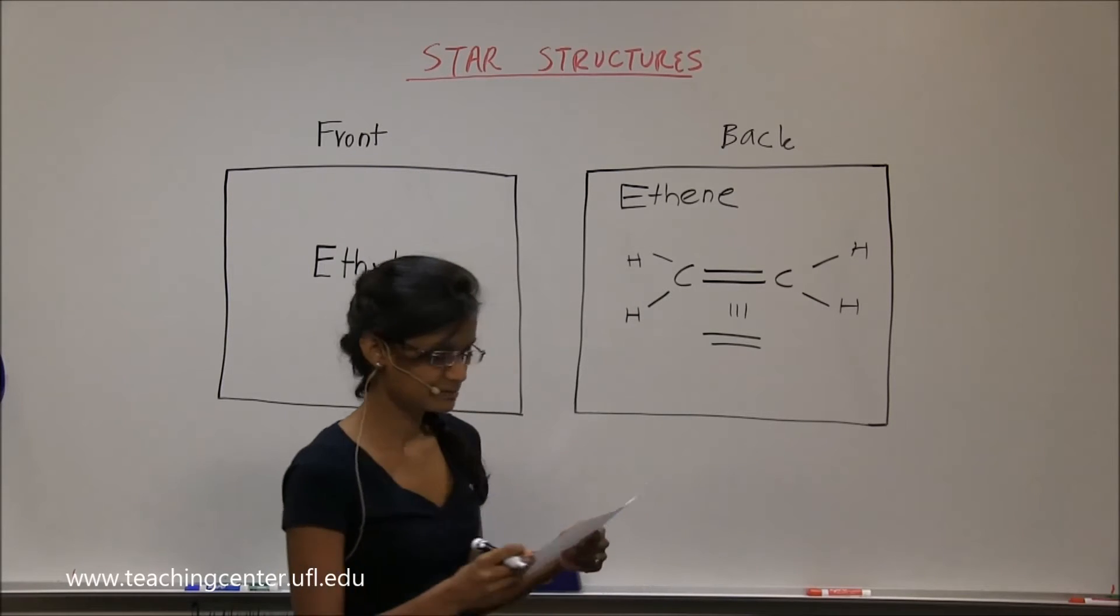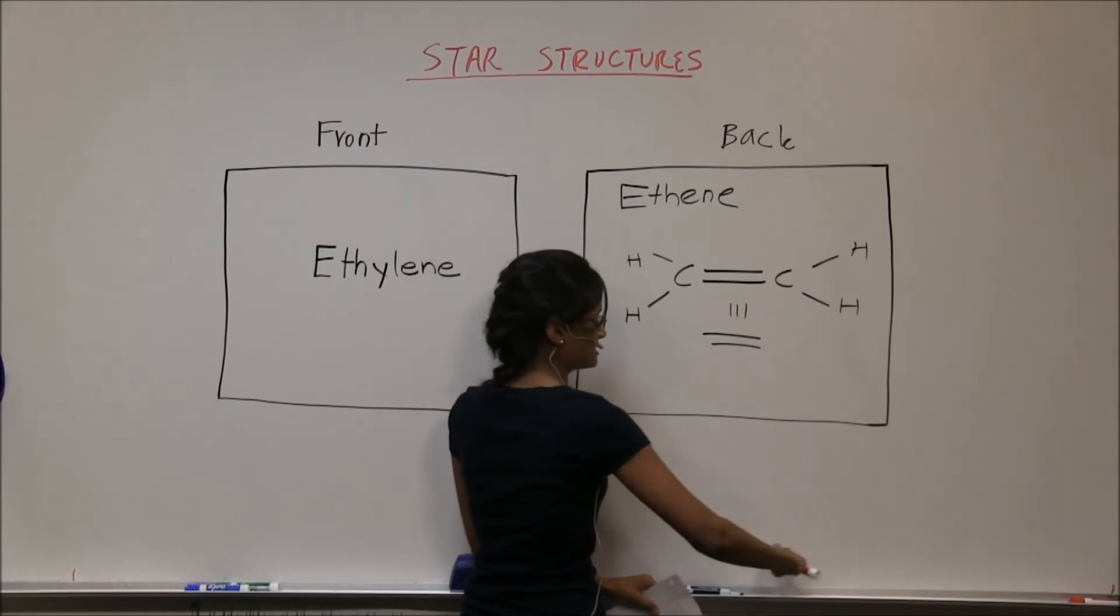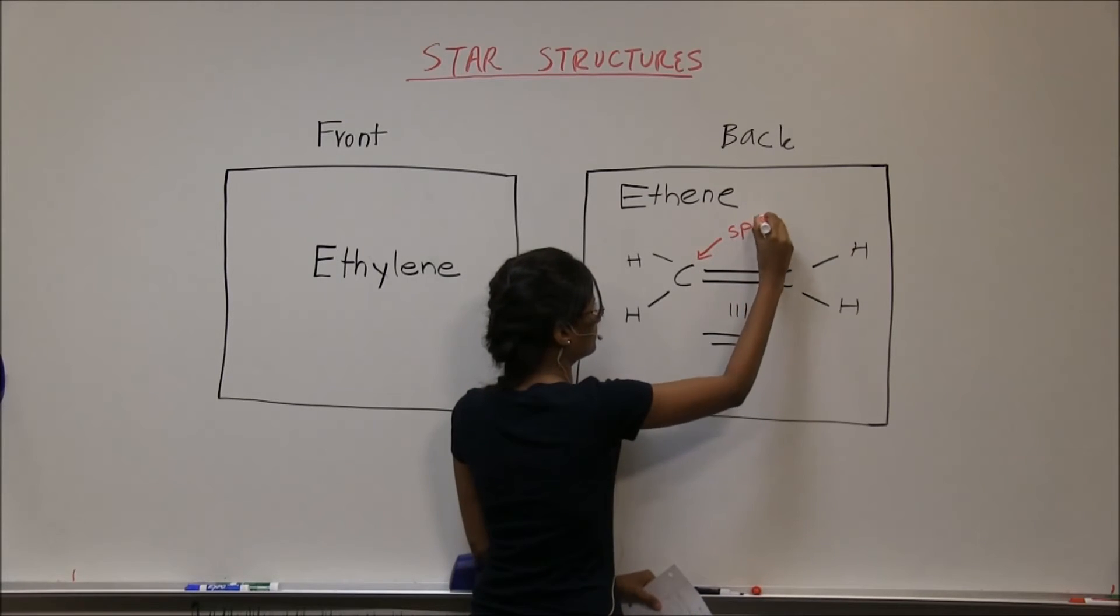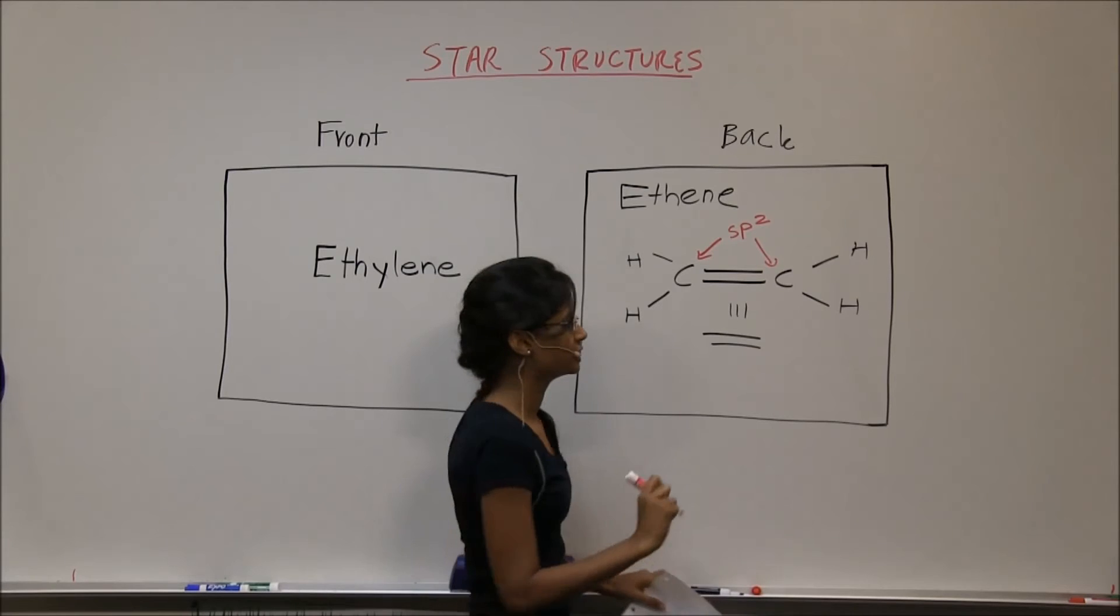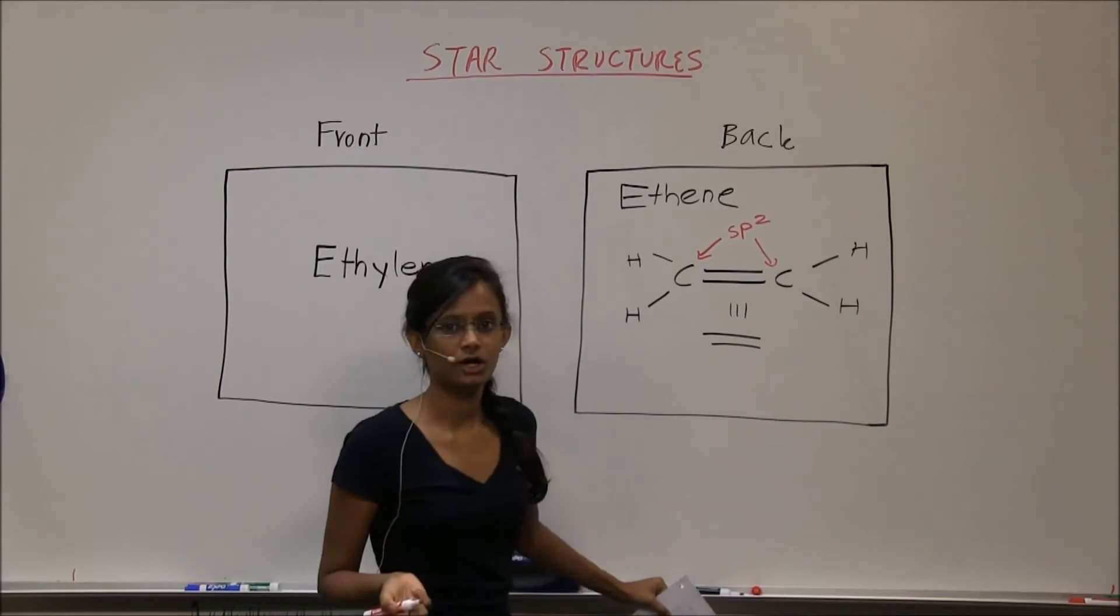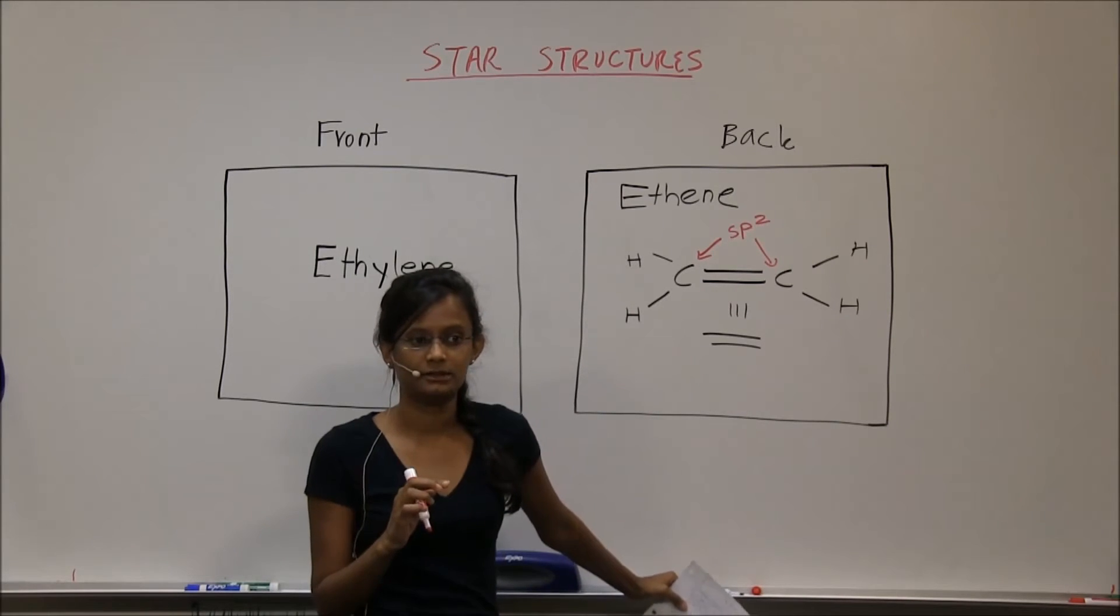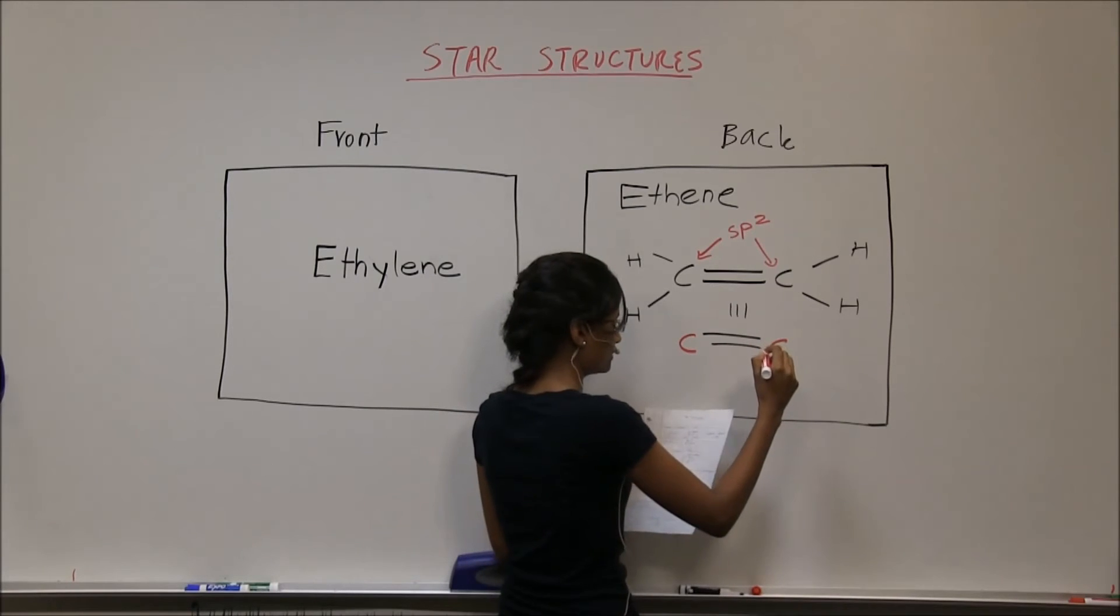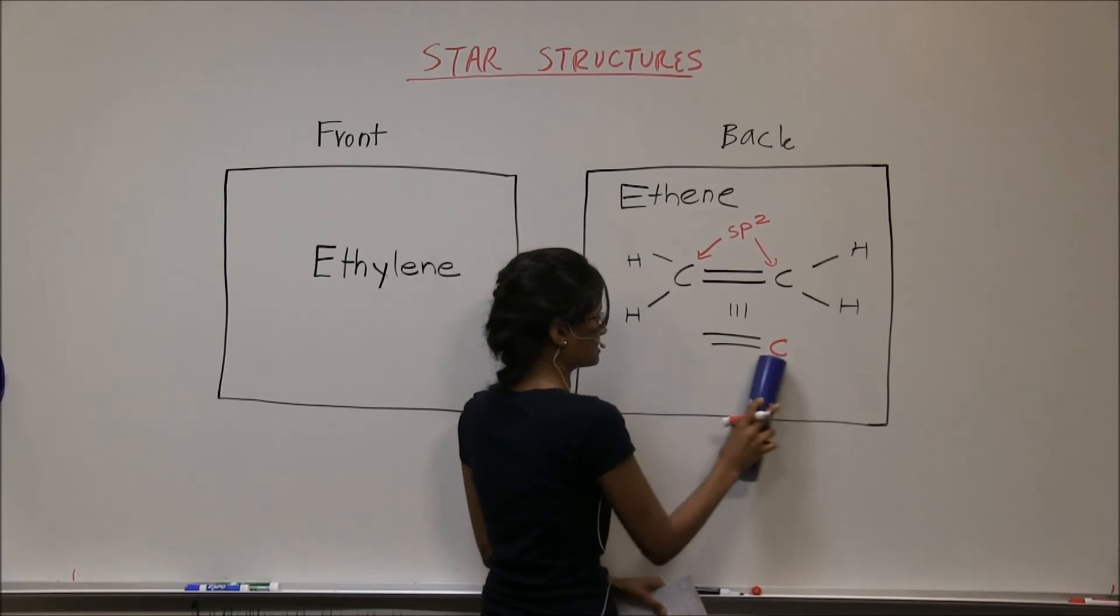Okay, anything else about ethene? Yes, so the hybridization of both of these carbons is sp2. So the shape is going to be trigonal planar. Always try to draw a double-bonded structure in side view perspective because that's where you can see. Okay, I'll just draw another side view perspective.